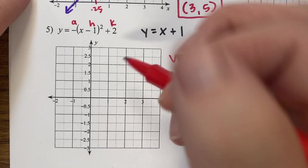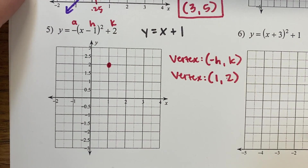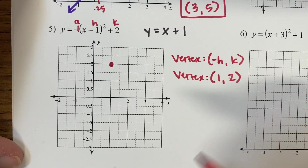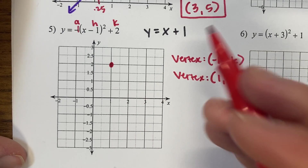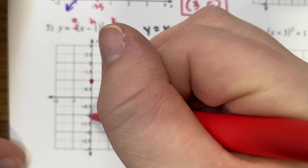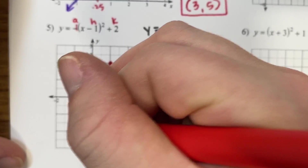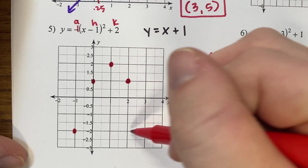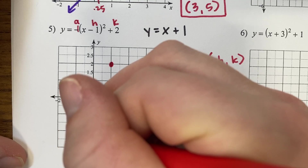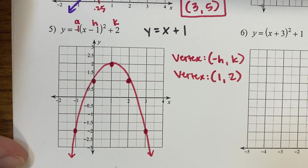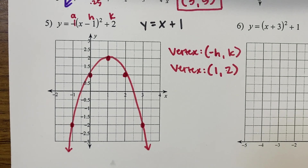So our vertex: our h is negative 1, so it becomes positive 1. Our k is positive 2 and stays the same. The vertex is 1, 2 — we didn't have to solve for anything. Because a is negative 1 in front, instead of going up 1 over 1, we go down 1 and over 1, and then down 3 over 1. This means the parabola points down — it's opening downward.